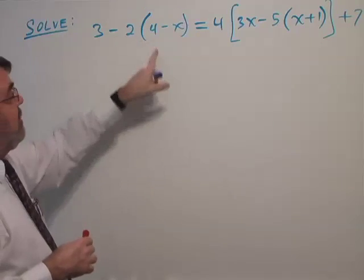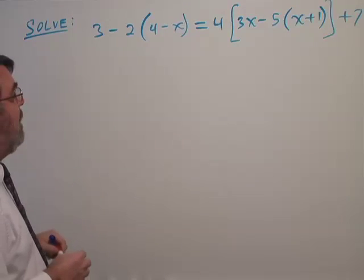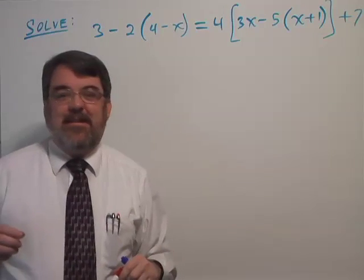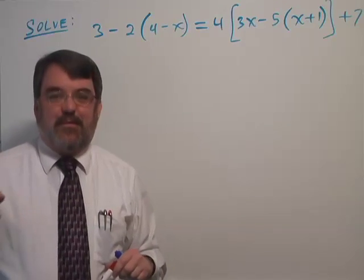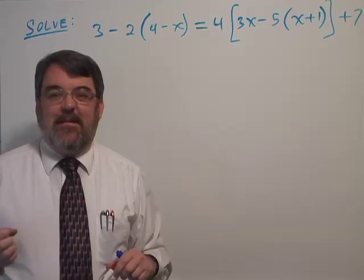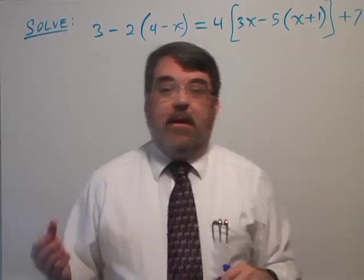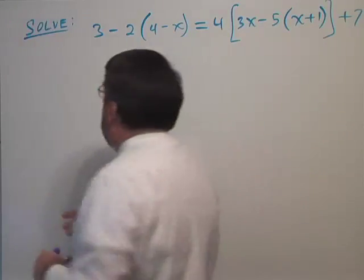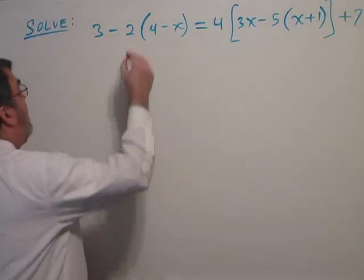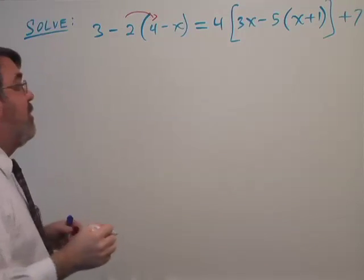For example, here I've got negative 2 multiplying the parentheses 4 minus x. In my experience, distribution errors are a big source of errors at the beginning of any algebra course, particularly college algebra. People will do this wrong. So how does this work? Minus 2 multiplies the 4, and minus 2 also multiplies the negative x.